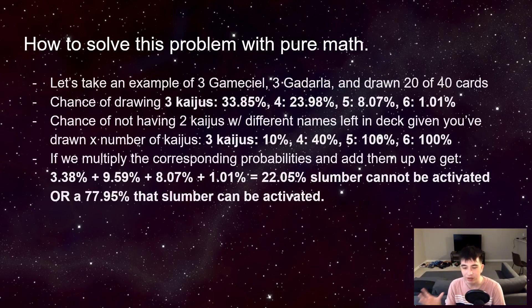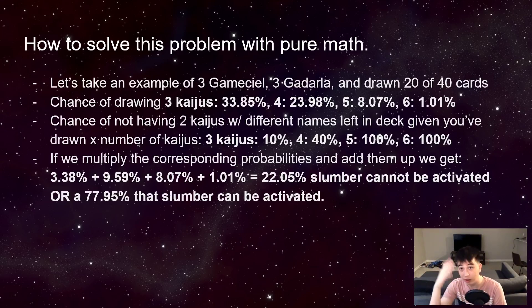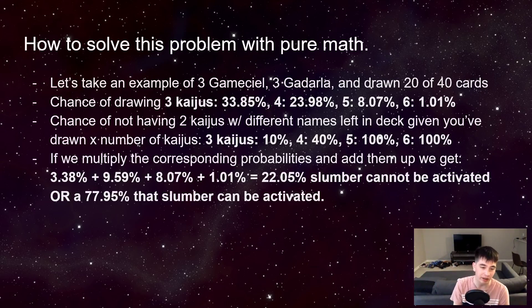With five and six drawn, five is still possible that you have one of each Kaiju left in your deck — you've got to calculate that. It's not as simple as that. But what we can do is actually just calculate all the probabilities out.